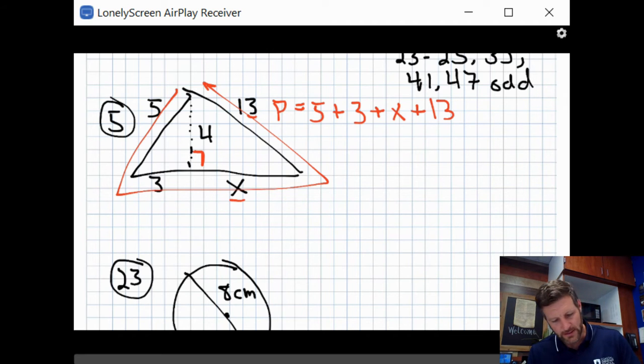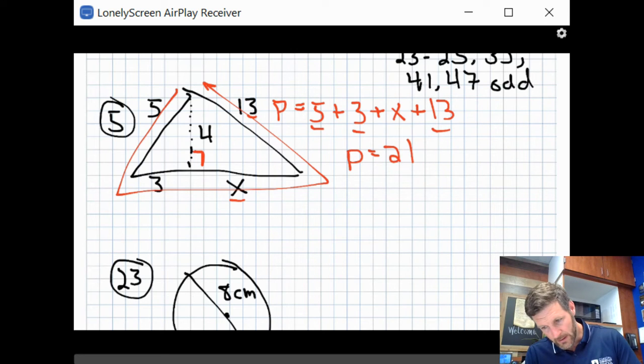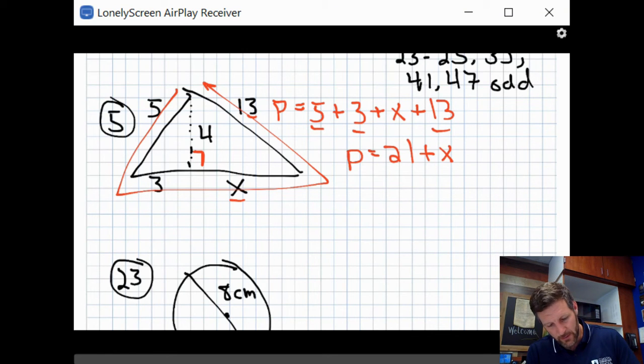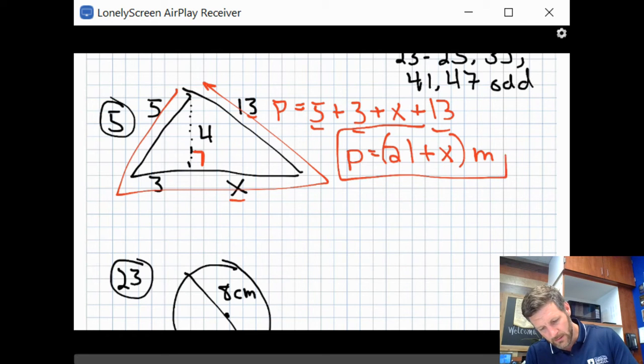Perimeter again is just the distance around. So I'm just going to add up the distances around this shape to see what they add up. Okay, so we're going to do 5 plus 3 plus X plus 13 equals my perimeter. So I got, let's see 5, 3, and 13. That's 8 plus 13, so that's going to be 21. So my perimeter is 21 plus X meters. And all they want you to do is leave that because we don't know what X is.